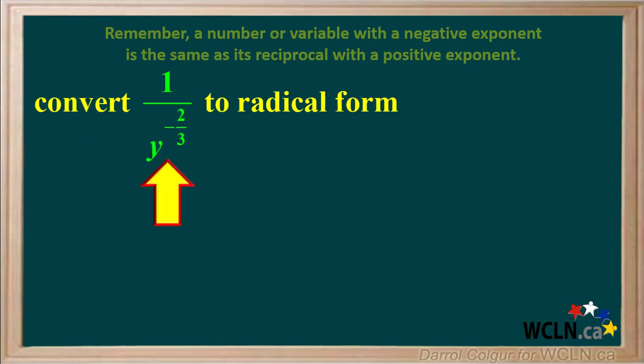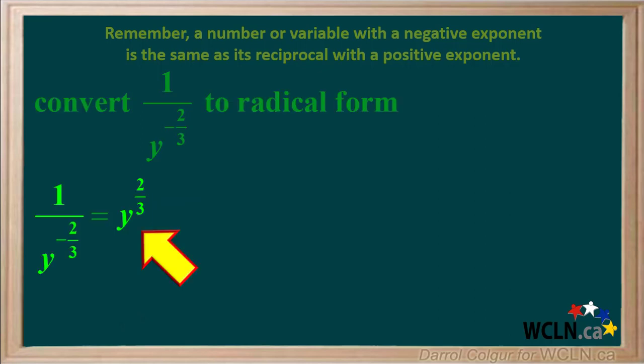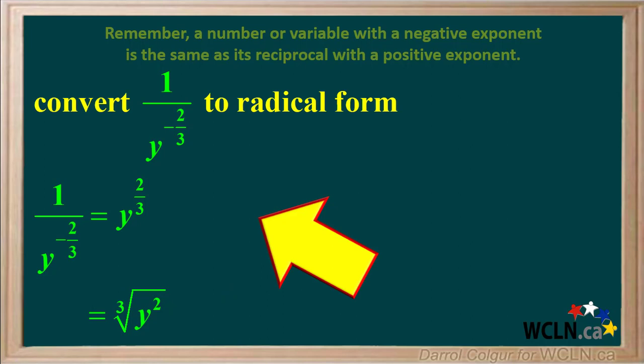Let's do another example. We're asked to convert 1 over y to the negative two thirds to radical form. 1 over y to the negative two thirds is the same as y to the positive two thirds. And y to the positive two thirds can be converted to the cube root of y squared — 3 is the index and 2 is the exponent of y. Here's the full solution. If you like, pause the video and review the steps yourself.